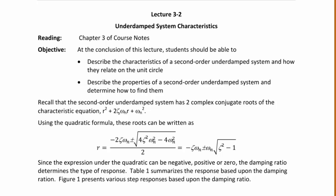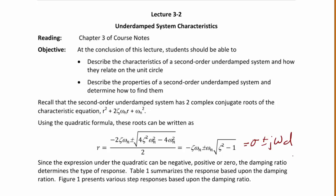Recall that the second order underdamped system has two complex conjugate roots of the characteristic equation r² + 2ζωₙr + ωₙ². We can use the quadratic formula to find these roots: r = −ζωₙ ± ωₙ√(ζ² − 1), which equals σ ± jωd, where σ is the damping factor and ωd is the damping frequency.